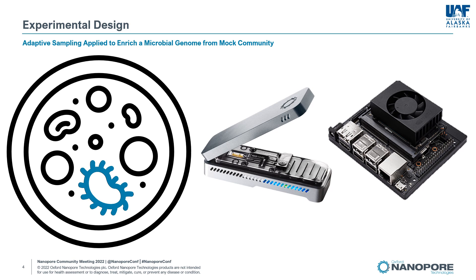For the sequencing experiments, we used adaptive sampling to enrich for a specific bacterial genome from a mock community. Each student prepared a rapid library and then sequenced using the MinION and their Jetson Compute module. Half of the channels had adaptive sampling turned on to selectively sequence one bacterial genome in our community, with the other half used as a sequencing control. Students ran three technical replicates for eight hours each on four different bacterial community members.